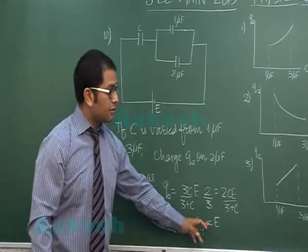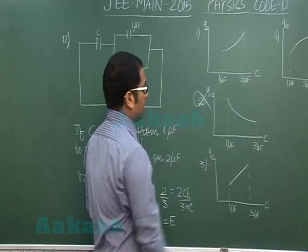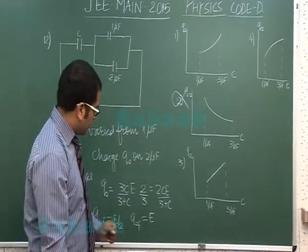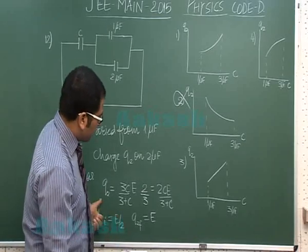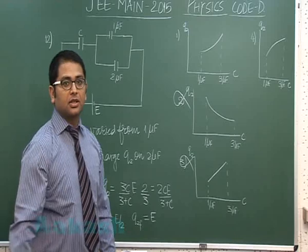Now if it is increasing, this option would be ruled out because that's decreasing. This can also be ruled out because the variation of q with C is not linear. So this option also goes.